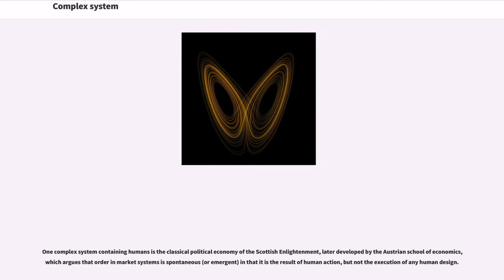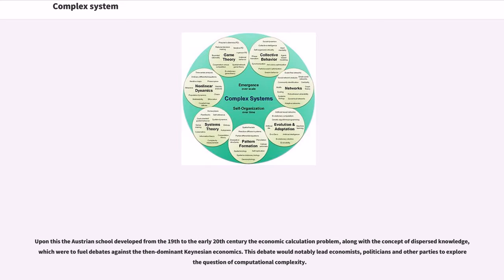One complex system containing humans is the classical political economy of the Scottish Enlightenment, later developed by the Austrian School of Economics, which argues that order in market systems is spontaneous, or emergent, in that it is the result of human action, but not the execution of any human design. Upon this the Austrian School developed from the 19th to the early 20th century the economic calculation problem, along with the concept of dispersed knowledge, which were to fuel debates against the then-dominant Keynesian economics. This debate would notably lead economists, politicians and other parties to explore the question of computational complexity.